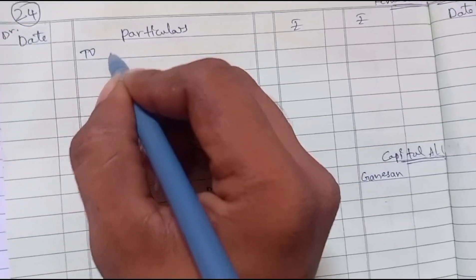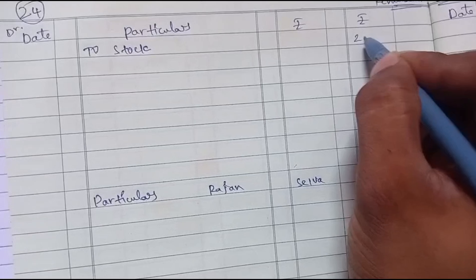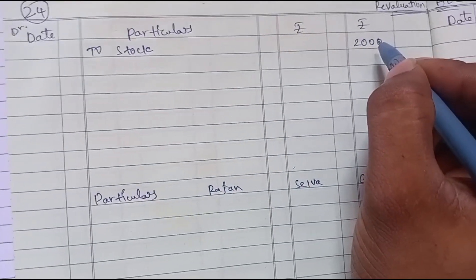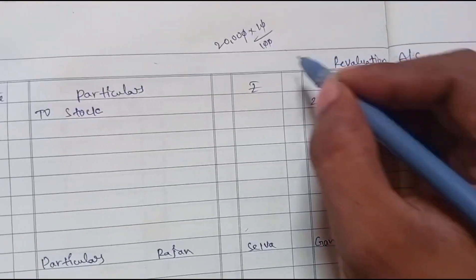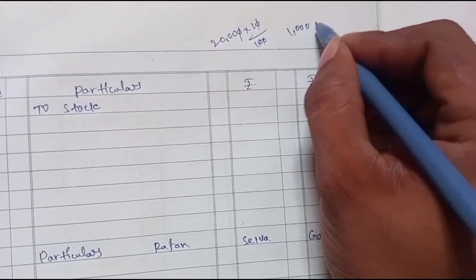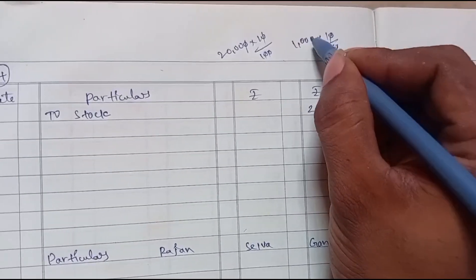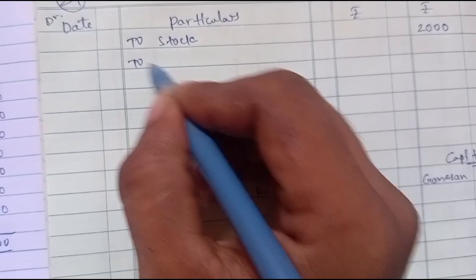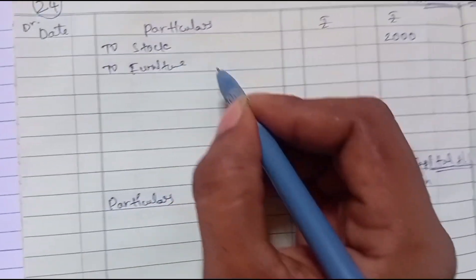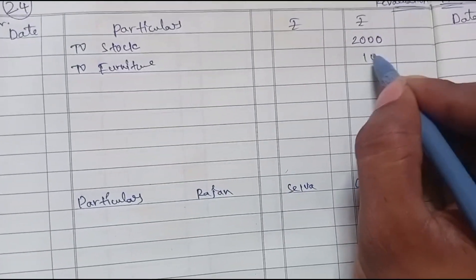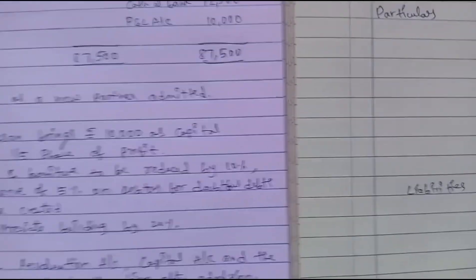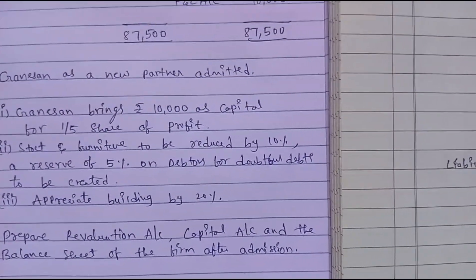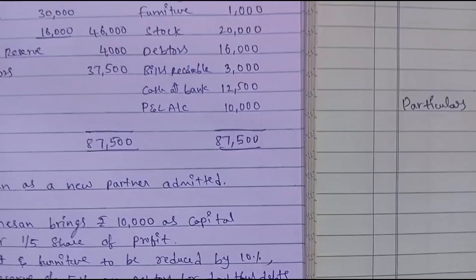Next, furniture. Furniture is 1,000 into 10 by 100, which equals 100. This is a decrease in asset, so on the debit side: To Furniture 100.